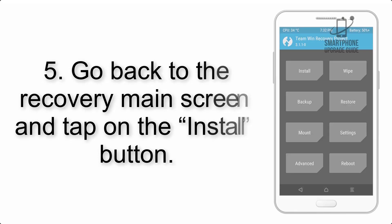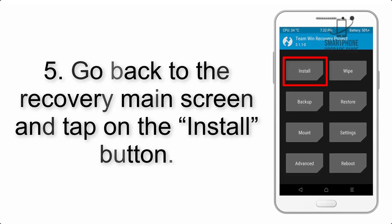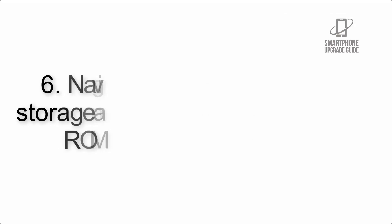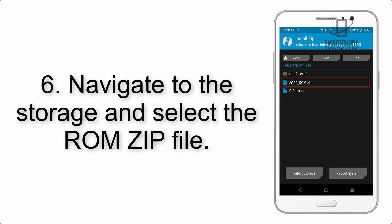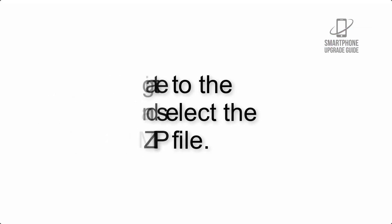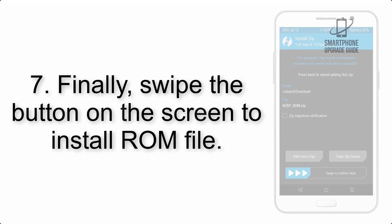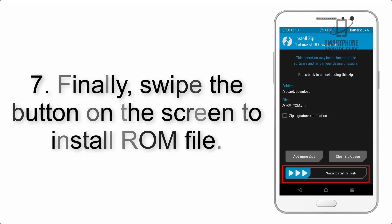Step 4: Swipe the button to wipe the device. Step 5: Go back to the recovery main screen and tap on the Install button. Step 6: Navigate to the storage and select the ROM zip file.